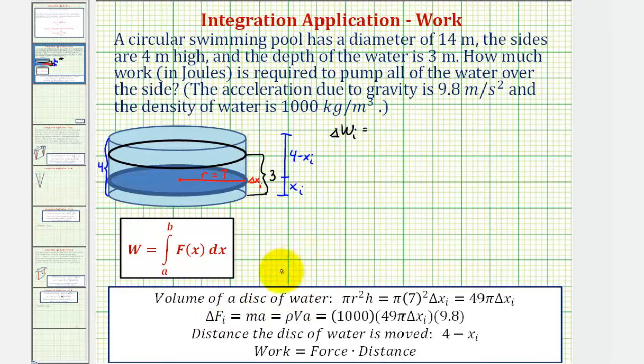But before we find the force, we have to find the volume of this disk. Since this disk is a right circular cylinder, the volume is equal to pi r squared h, where r is seven, and the height h is equal to delta x sub i. Therefore, the volume is equal to 49 pi times delta x sub i. Now we know force is equal to mass times acceleration, but we don't know the mass of this disk of water. However, since the mass is equal to the density times the volume, and we know both of these, we can now find the mass. The density of the water is 1,000 kilograms per meter squared. The volume we just found, and the acceleration due to gravity a is 9.8 meters per second squared. So this product gives us the force of this disk of water.